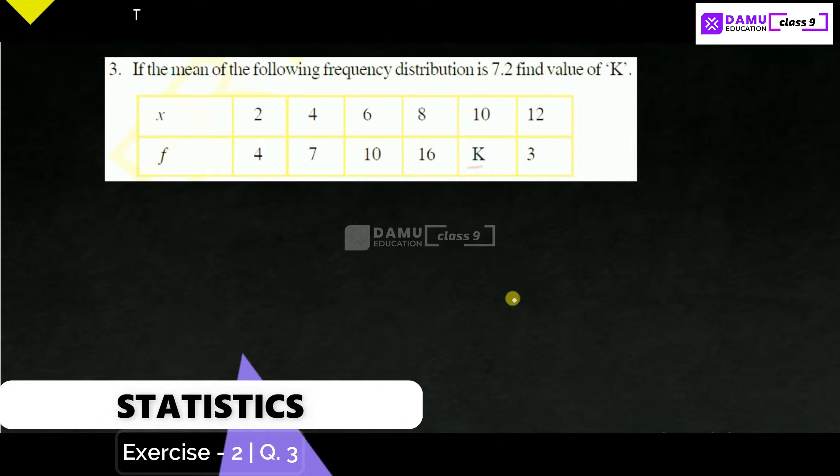They are missing some value here. This value, we have to find it. What is this value? k equals what? If mean is 7.2, then what is the k value? What is the mean formula?